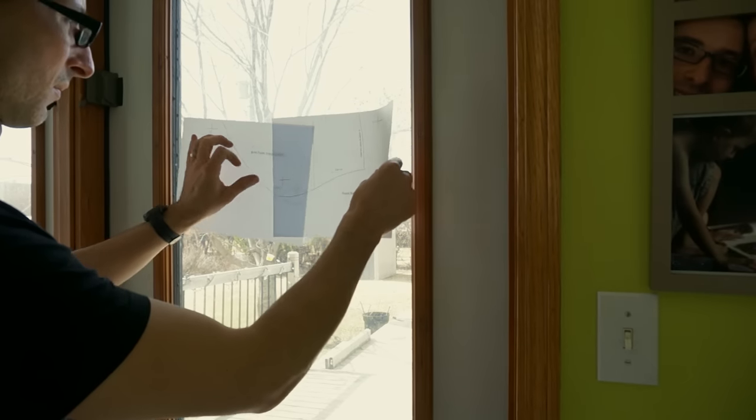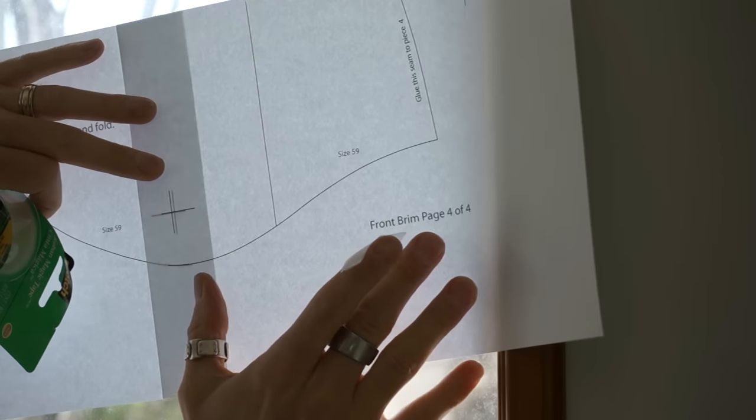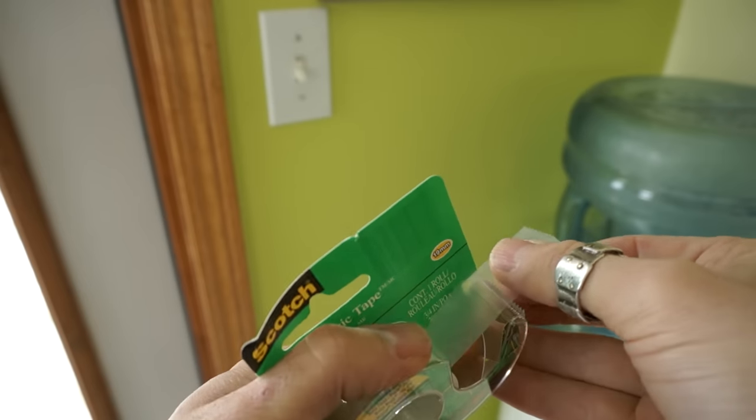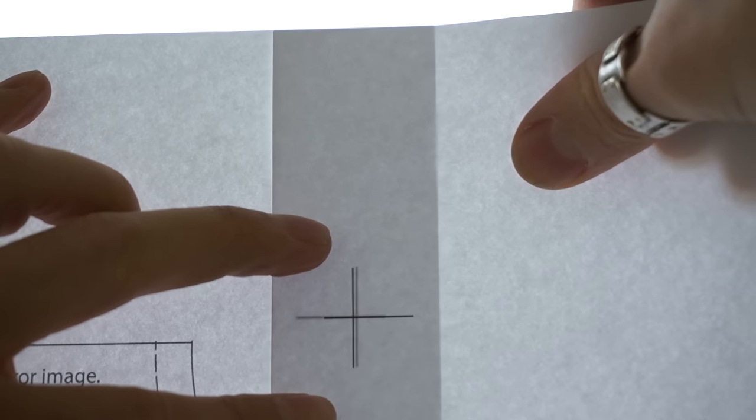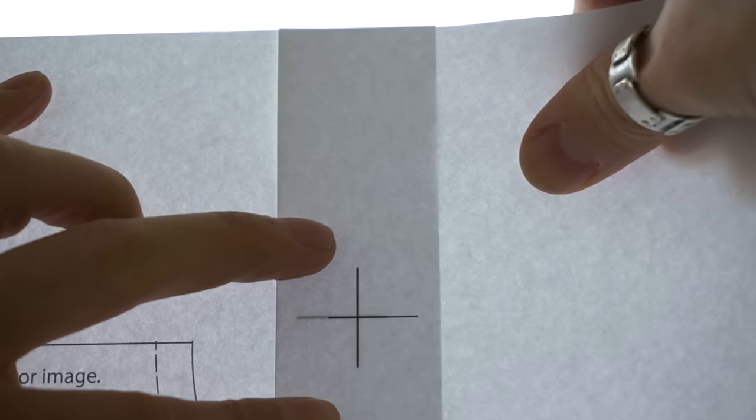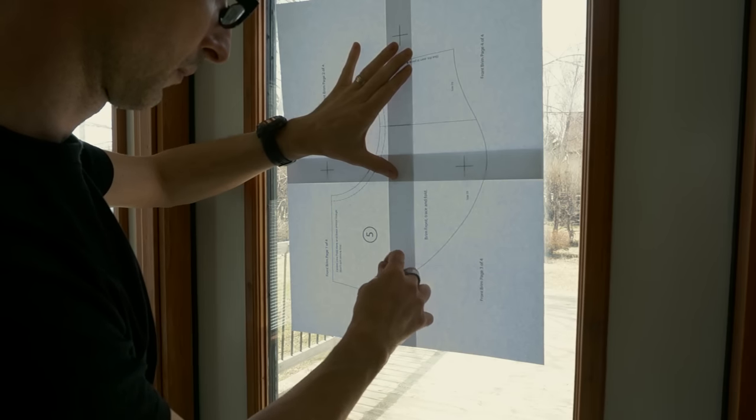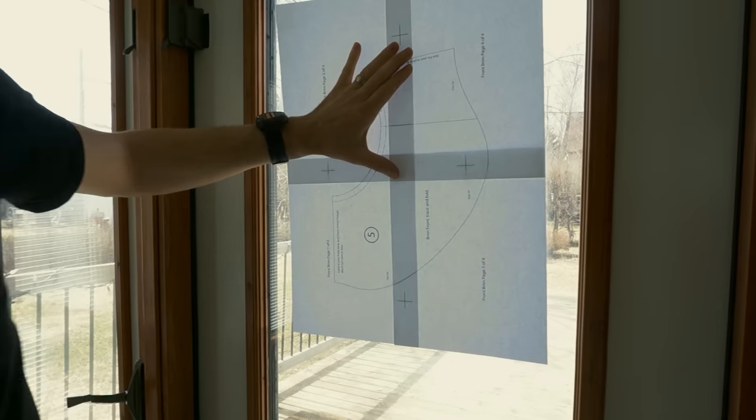Print the pattern pieces for your size of hat. Some of them will need to be taped together. I like to do this on a window so I can see the alignment mark of the page underneath. Make sure you place your tape inside the pattern, otherwise when you go to cut it out, it's all going to just fall apart.